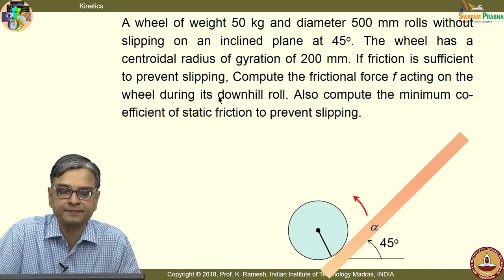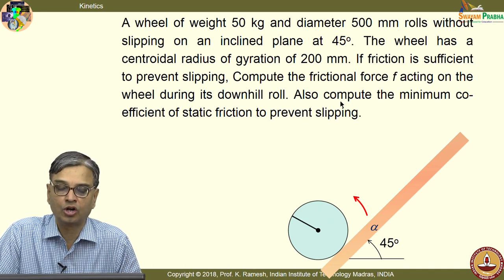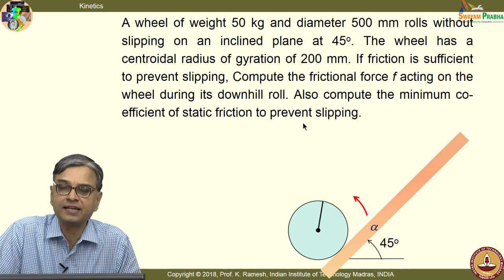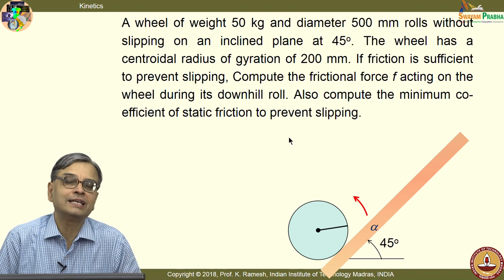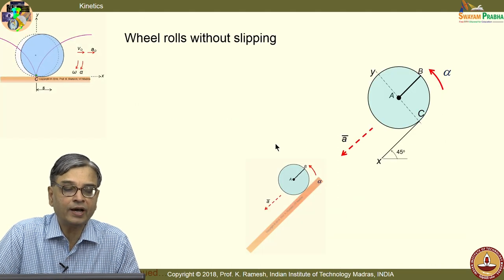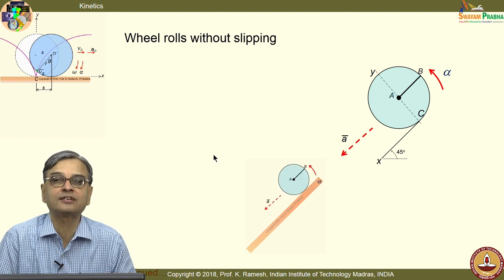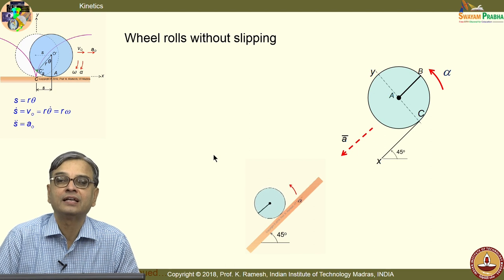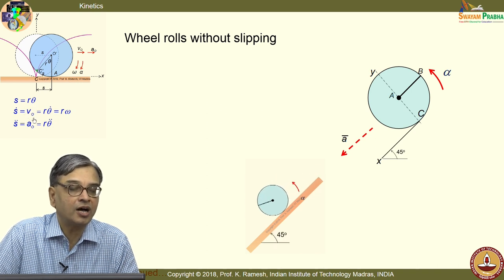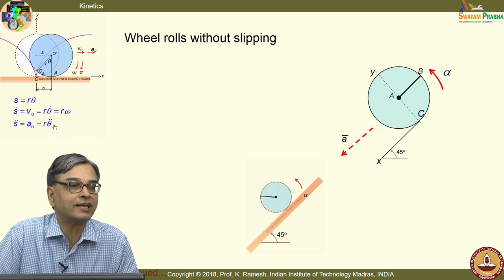If friction is sufficient to prevent slipping, compute the frictional force F acting on the wheel during its downhill roll, and also compute the minimum coefficient of friction to prevent slipping. Rolling is general plane motion. You are expected to remember the kinematical conditions learnt earlier — the relationship between mass point velocity and angular velocity, as well as mass point acceleration and angular acceleration.